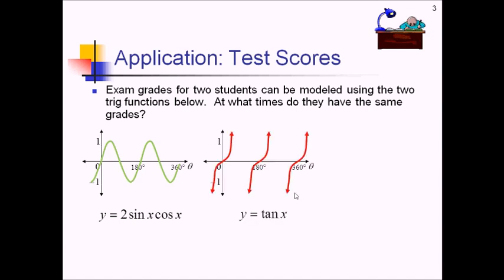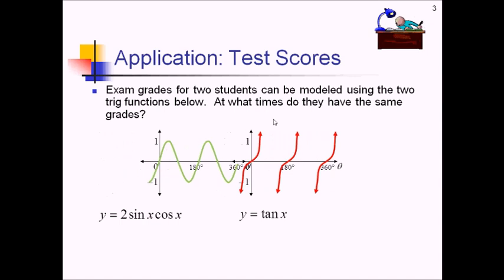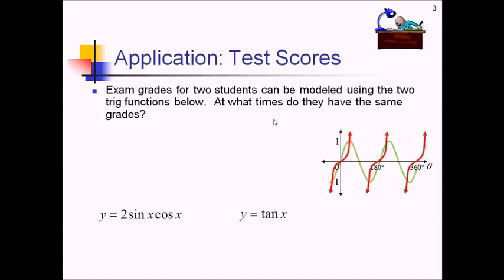Student two is just the tan function here. This is what those patterns for test exams look like. We want to figure out at what times these students have the same grades. So basically we're asking if we put these graphs on the same axes, like so, where would they overlap? Which we can figure out by setting these two functions equal to each other. And now, of course, the question is, where do we go from here?